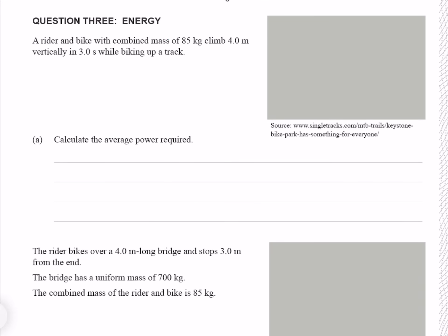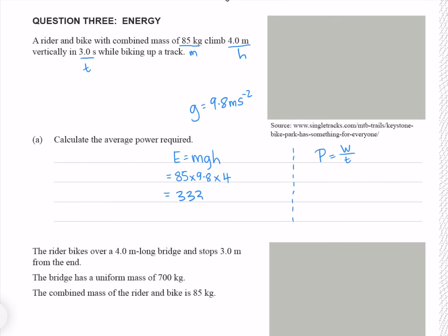Question 3. A rider and bike with a combined mass of 85 kg climb 4 meters vertically in 3 seconds while biking up a track. Calculate the average power required. Power equals work over time. The work done against gravity equals gravitational potential energy: mgh = 85 × 9.8 × 4 = 3332 joules. Putting that into our power equation gives me 1100 watts to two significant figures.